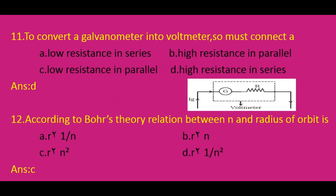To convert a galvanometer into a voltmeter, we connect a high resistance in series with the galvanometer. This circuit diagram shows the galvanometer connected to a high resistance in series, and then it acts as a voltmeter. So the answer is option D: high resistance in series.